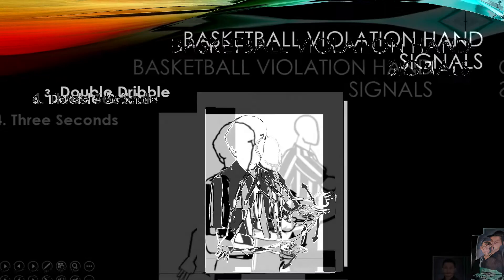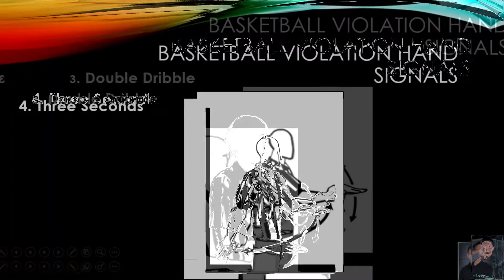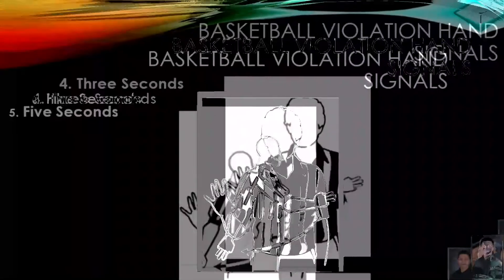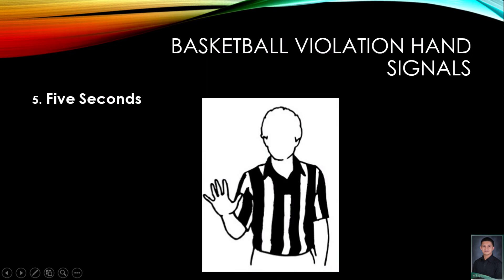as if dribbling a basketball. Number four is the three seconds violation. The official will indicate that the player has committed a three seconds violation by having three fingers raised and the hand makes a sweeping motion back and forth at the side. The next one is the five seconds violation. In order to signal a five seconds violation, the official